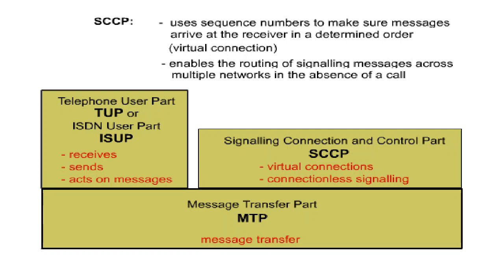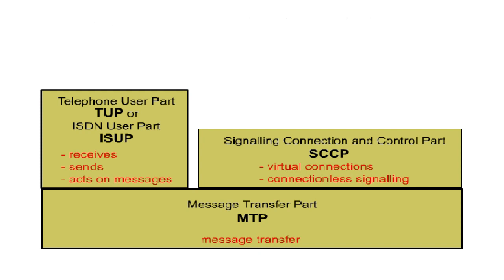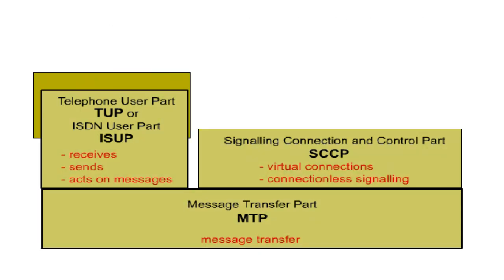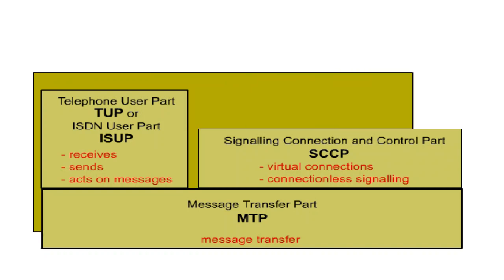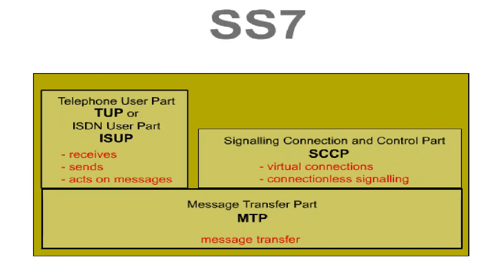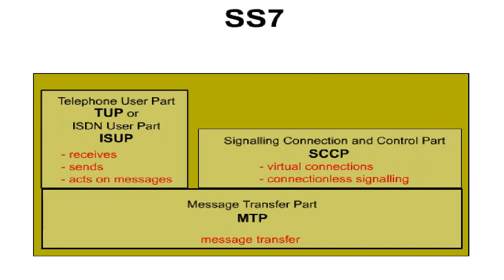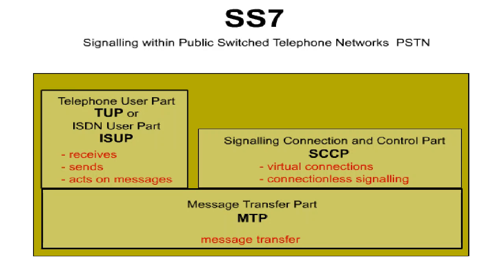This layer structure, consisting of MTP and TUP/ISUP, as well as SCCP, represents the SS7 protocol, which is the protocol used for signalling within public switch telephone networks and ISDN networks.